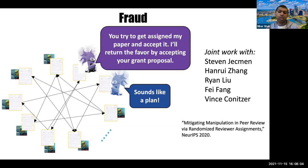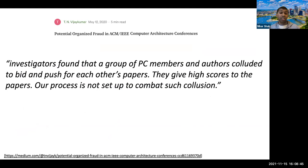In recent years, there has been a particular type of fraud uncovered where a reviewer and an author make a pact. The reviewer tries to get assigned the author's paper and then push for acceptance of the colluding author's paper. In return, the colluding author returns the favor either in that conference or elsewhere. This was perhaps first uncovered in the computer architecture community, where a thorough investigation found these kinds of collusions and was prompted by quite dire and unfortunate consequences.